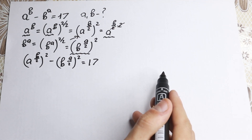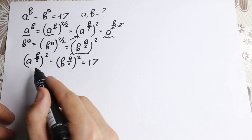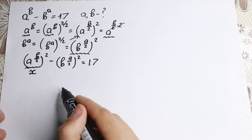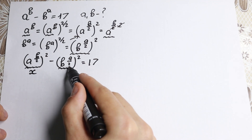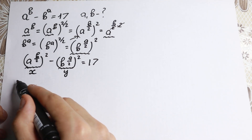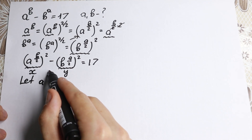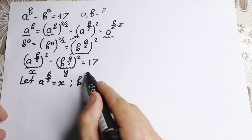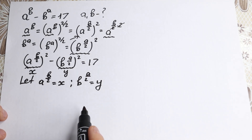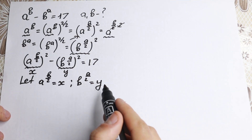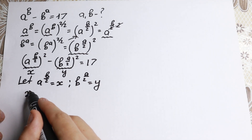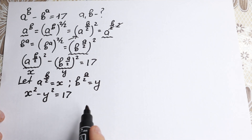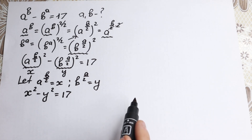Now let's use substitution. Let x equal a to the power b over 2, and let y equal b to the power a over 2. With this substitution, our equation becomes x squared minus y squared equals 17.